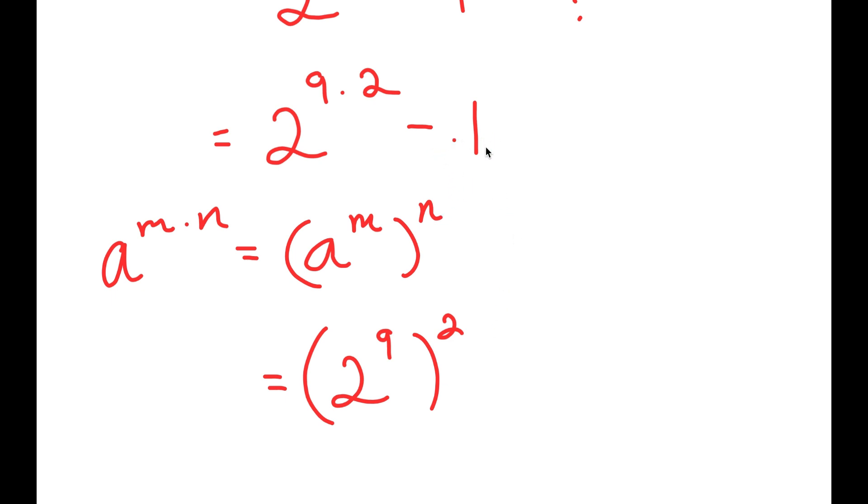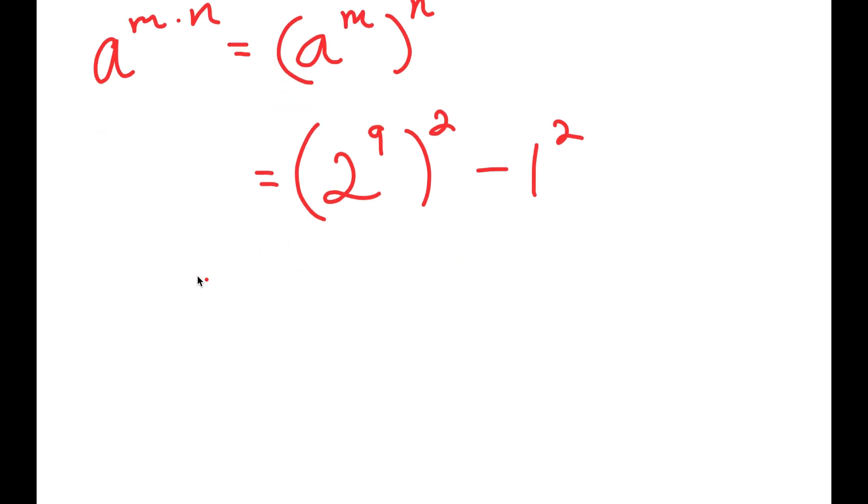And I'm also going to rewrite negative 1 as negative 1 squared. So now another property that I can use is that if I have something with form a squared minus b squared, this is equal to a plus b times a minus b.